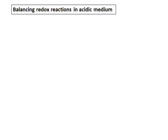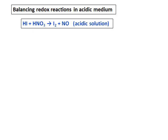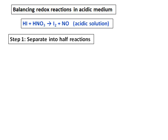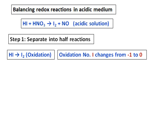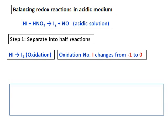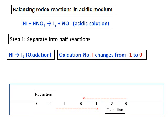Now let us apply all the steps for balancing the equation given: HI plus HNO₃ giving I₂ plus NO. This is a redox reaction in acidic medium. The first step is to separate them into half reactions. I can see that HI is getting converted into I₂ and this process is oxidation. How do I know it is oxidation? If you look at the oxidation number, I changes from -1 to 0, and this is oxidation.